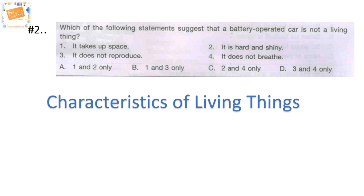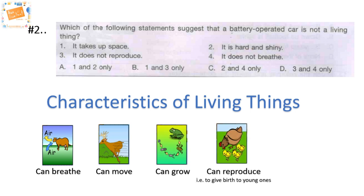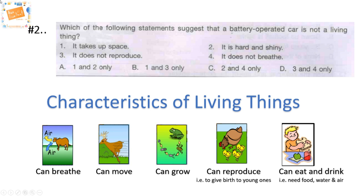Let's check your answer. The characteristics of living things: it can breathe, can move, can grow, can reproduce, and can eat or drink. Statement one — it takes up space: nothing to do with those characteristics. Statement two — it is hard and shiny: that's about the car itself, not a living-thing characteristic. Statement three — it does not reproduce: reproduction is one of the main characteristics of a living thing, so yes. Statement four — it does not breathe: breathing is one of the main functions of living things. So statements three and four clearly indicate the battery-operated car is not a living thing. Our answer is option D.